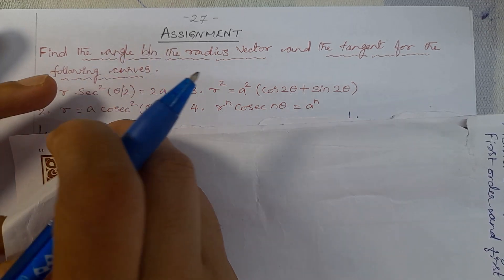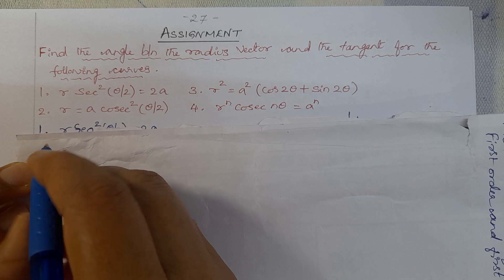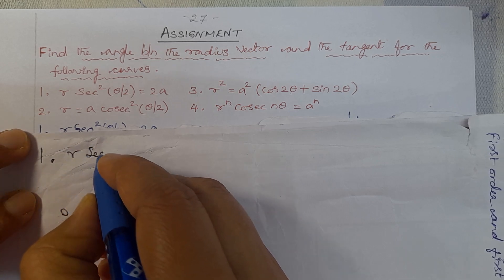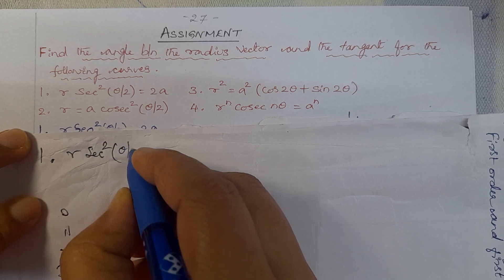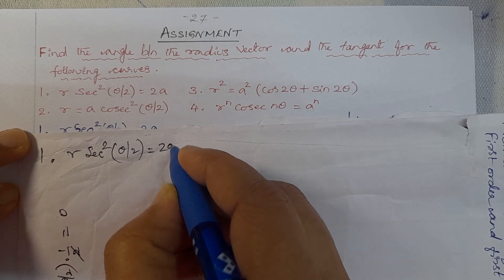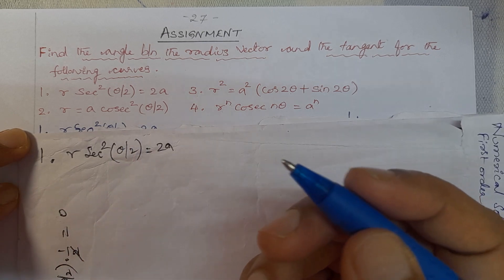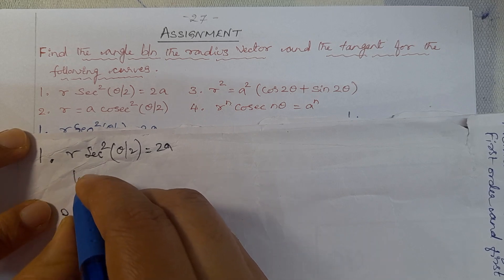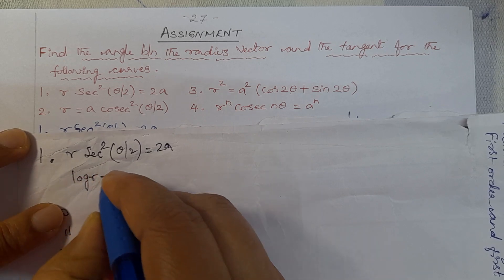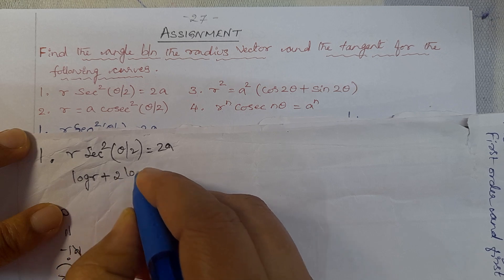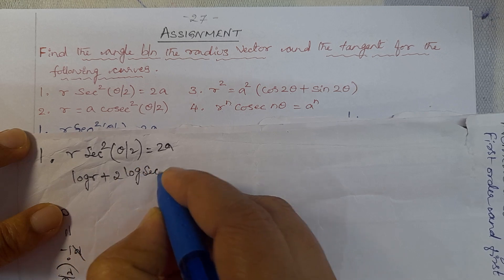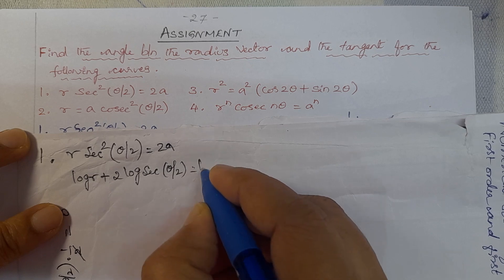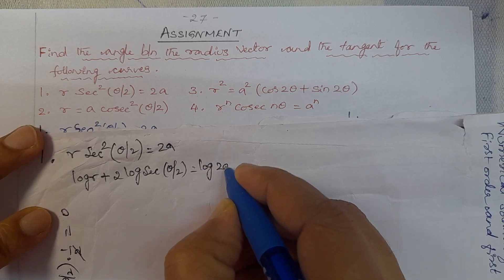First problem: R·sec²(θ/2) = 2a. Taking logarithm on both sides: log R + 2·log(sec(θ/2)) = log(2a).